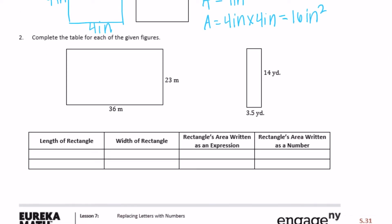Number two, complete the table for each of the given figures. Let's start with the first one. We have 36 meters by 23 meters. So the length of the first one is 36 meters, the width is 23 meters. So the rectangle's area would be 36 meters times 23 meters, and written as a number, let's do 36 times 23.